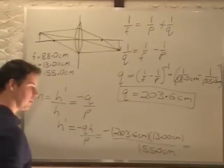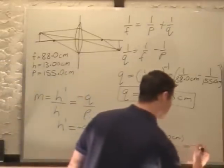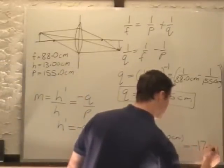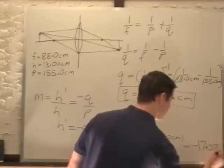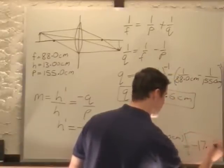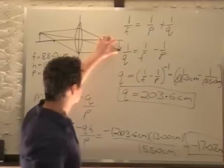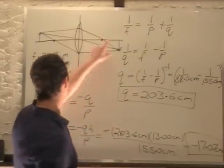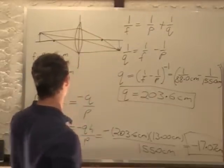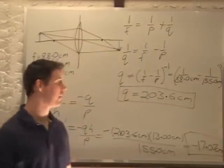If we multiply that through, we get negative 17.07 cm. That is our final answer. It's negative because the image is actually inverted, and it's going to be 17 cm tall, a little bit taller than the original. Those are our final answers.